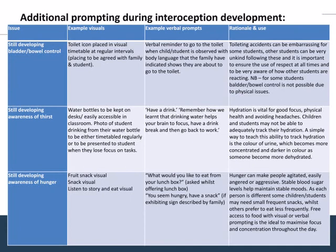When you first start to teach interoception explicitly, the rationale is to develop that ability to manage yourself with support. In reception, for example, you might need additional visual and verbal prompts. When you have a visual timetable, you should probably include toilet prompts too if you have even one child who isn't in touch with when they need to go. Just saying 'everyone go to the toilet' before recess doesn't mean that child picked up on it — they're the ones who come back ten minutes later rushing out because they suddenly really need to go.